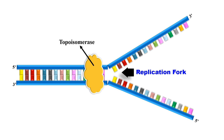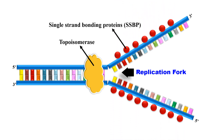Topoisomerase relieves the DNA strain. Now the two strands are opened up. In order to stabilize them, other proteins come in to stabilize these single strands. These proteins that stabilize the single-strand DNA are known as single-strand binding proteins, that is SSBP. They stabilize these single strands and prevent them from breakage. This is the initiation phase of DNA replication.